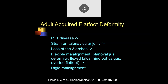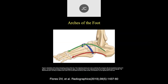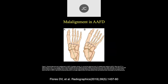As time goes along it becomes rigid, which is much more difficult to treat, so you want to pick it up early. The arches of the foot include the longitudinal arch in the midline, the short axis arch, and the longitudinal arch on the lateral aspect including the fifth metatarsal. In adult acquired flat foot deformity, this would be the normal and this is the abnormal over there.